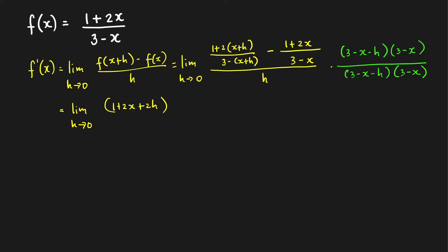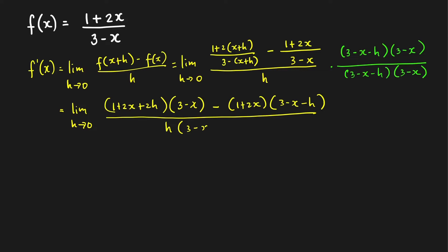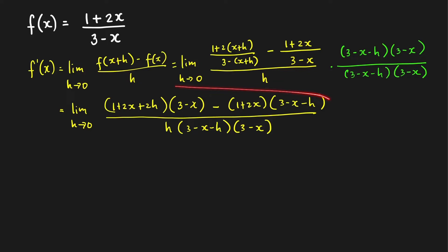And then times 3 minus x. Then minus — multiplying the other term — we cancel 3 minus x and get 1 plus 2x, times 3 minus x minus h. All over the denominator: h times 3 minus x minus h times 3 minus x. When you're computing for the derivative of a rational function like this, you'll always be able to obtain a common factor h between the numerator and denominator when you simplify.